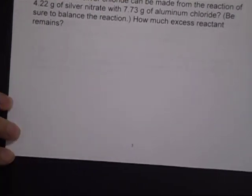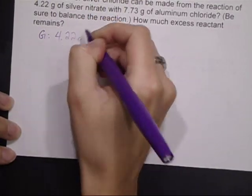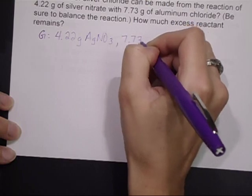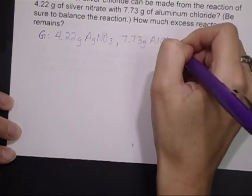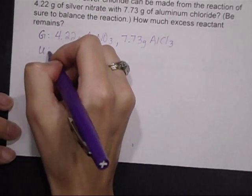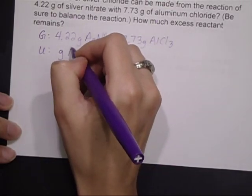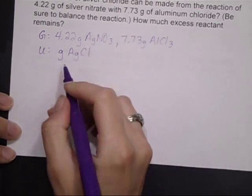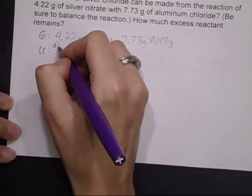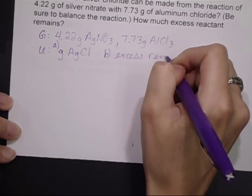Alright. One of the clues that we have a limiting reactant problem is that I have two given values. I have 4.22 grams of silver nitrate, and I also have 7.73 grams of aluminum chloride. That means I have two reactants. I have to figure out which one. My unknowns: what mass of silver chloride can be made. So I want grams of silver chloride. Ag is a plus one, Cl is a minus one. And I also want to know how much excess reactant remains.